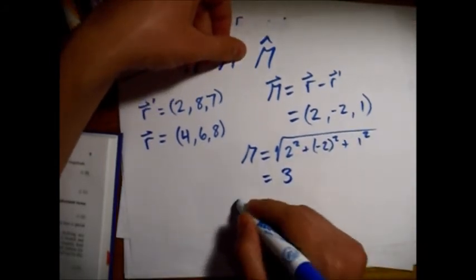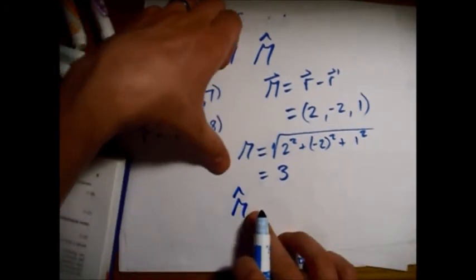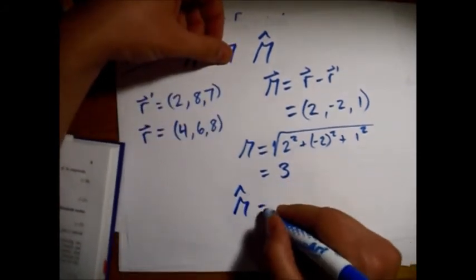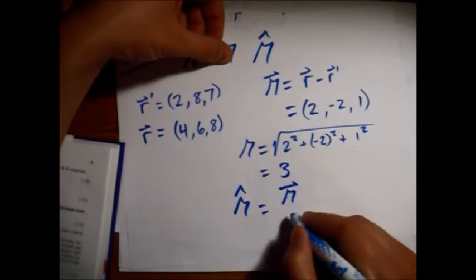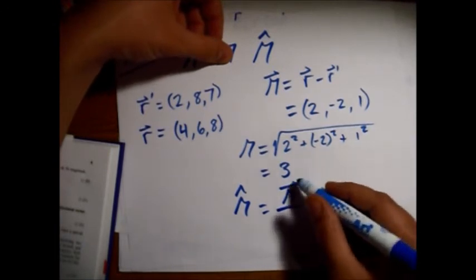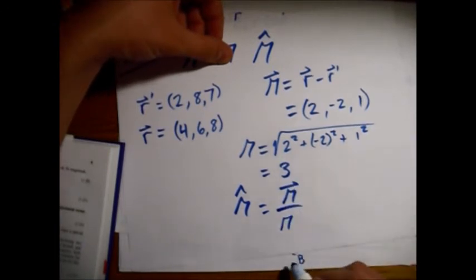So now we take, we find this R hat vector, which is just equal to the normal separation vector divided by its magnitude.